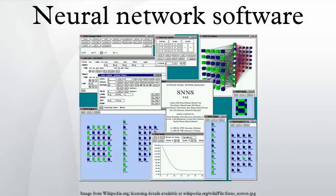In the study of biological neural networks however, simulation software is still the only available approach. In such simulators the physical, biological and chemical properties of neural tissue, as well as the electromagnetic impulses between the neurons are studied.